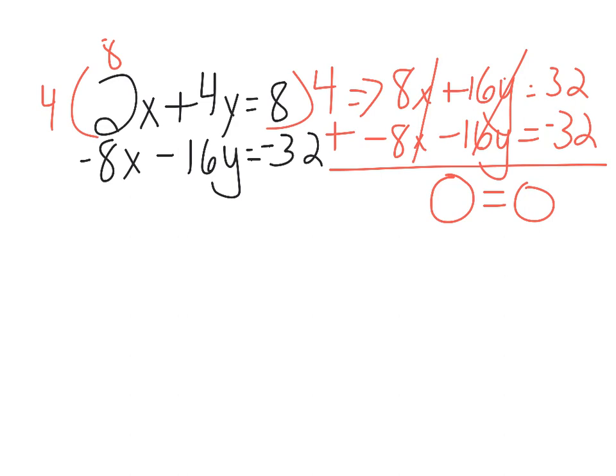So zero equals zero. That's true. So this is an example of infinite solutions. And if you graphed, that would mean that you have the same line twice, so they are sitting directly on top of each other.